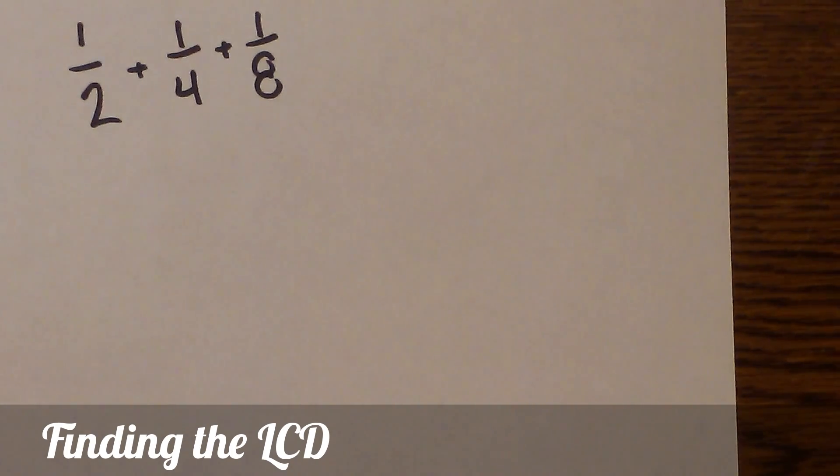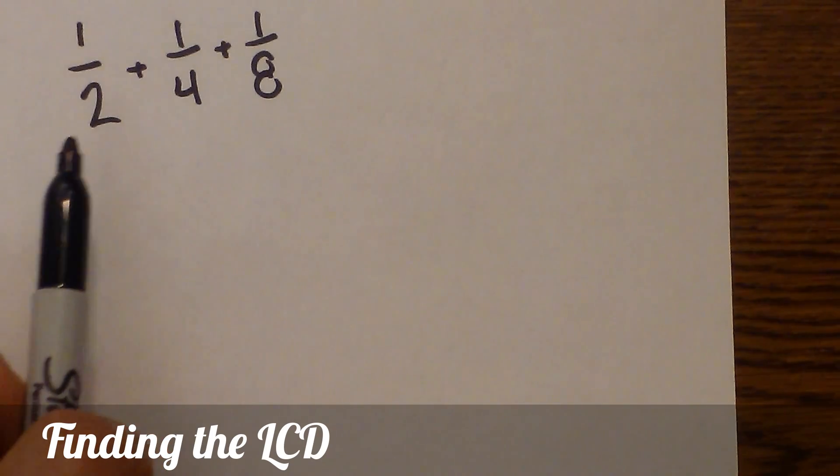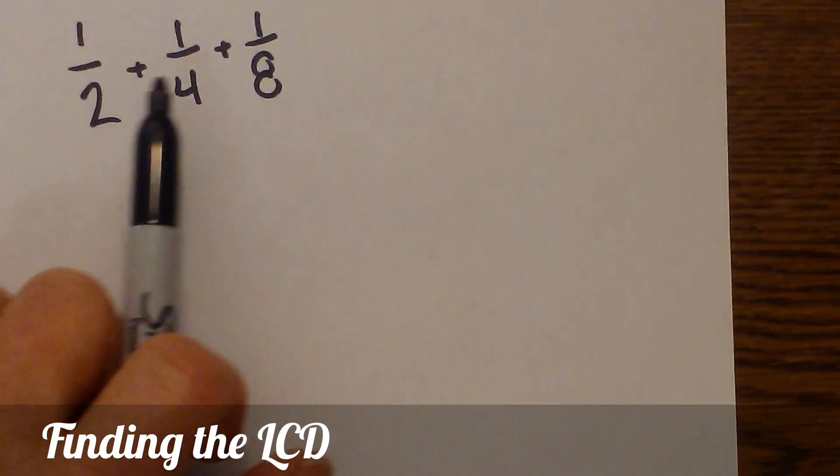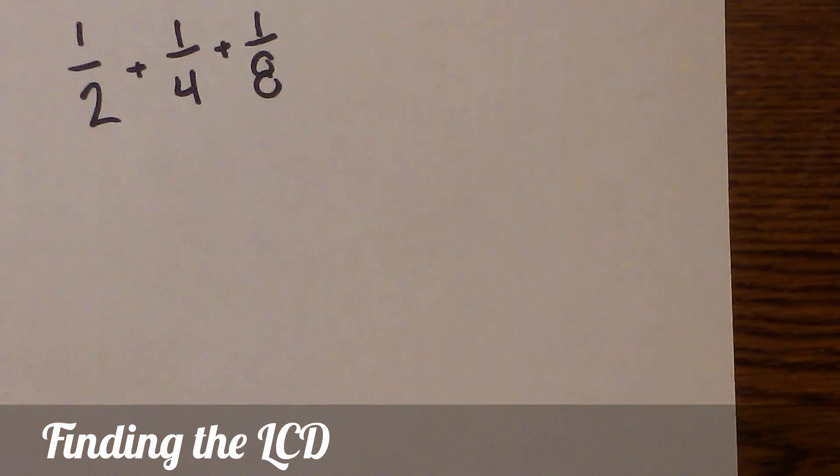Say we have these three fractions: 1/2, 1/4, and 1/8, and we need to find a common denominator. What we'll do is basically find the lowest common multiple of these three numbers. The easiest way is to create a factor tree.